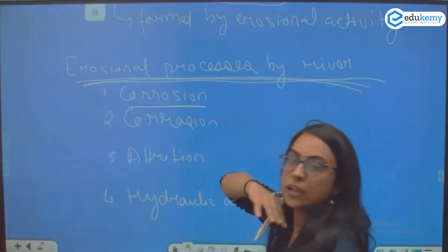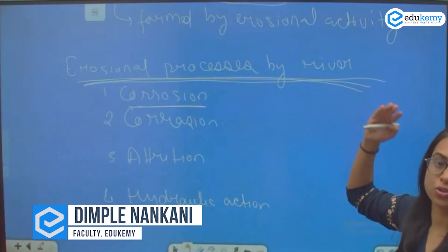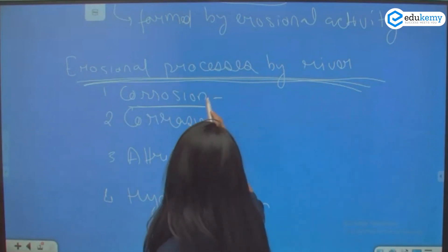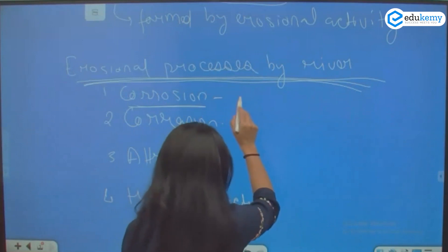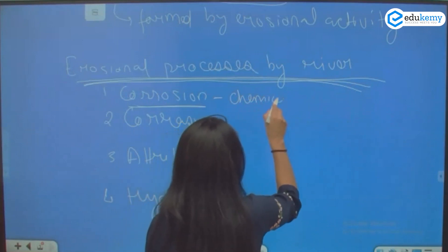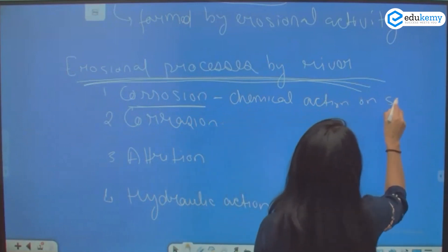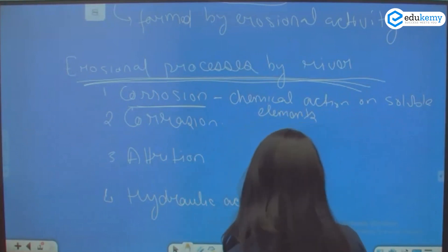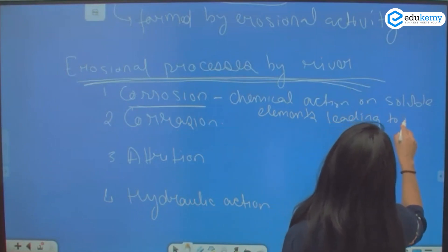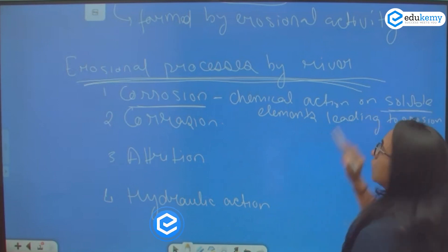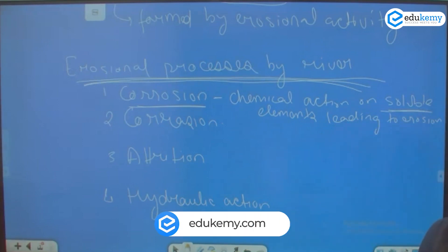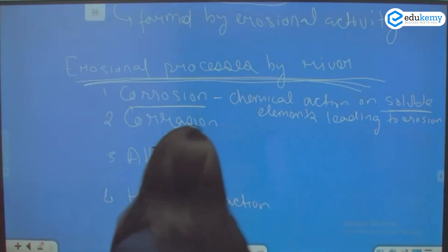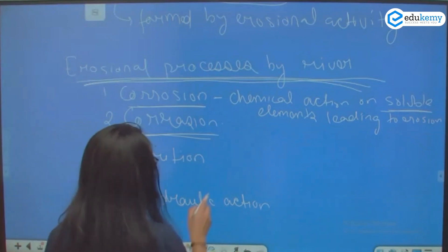There are four types of erosional processes by the river: corrosion, corrasion, attrition, and hydraulic action. Corrosion is basically nothing but solution — it is the chemical action on soluble elements leading to erosion. The chemical action on these soluble elements is called corrosion.